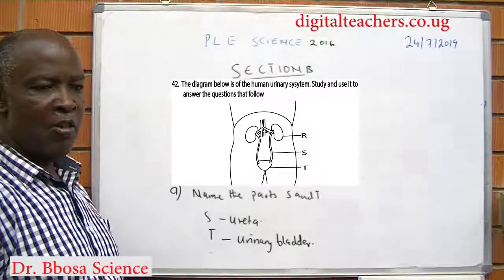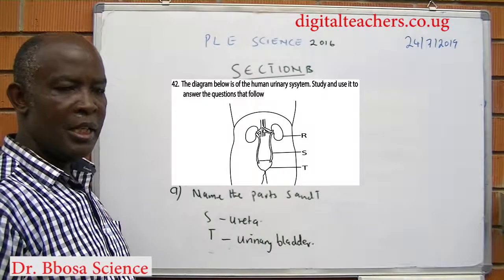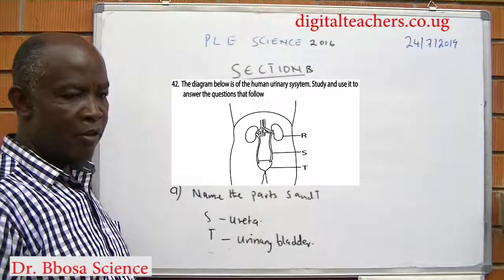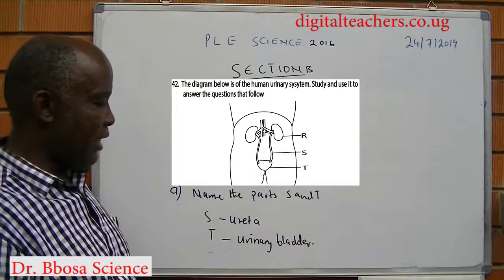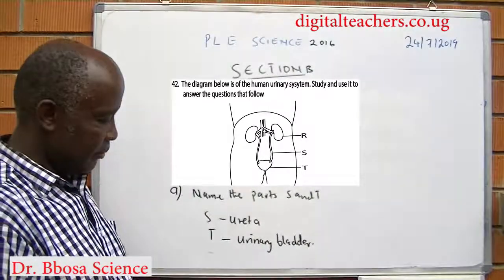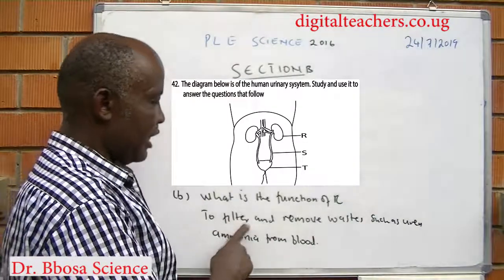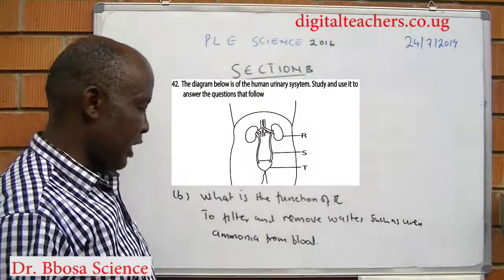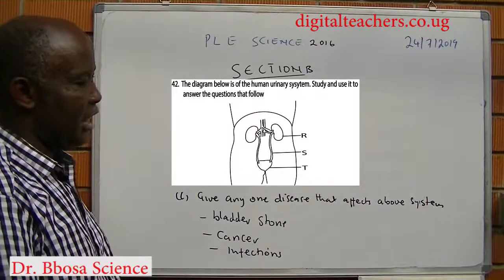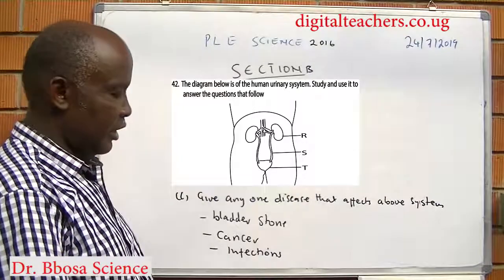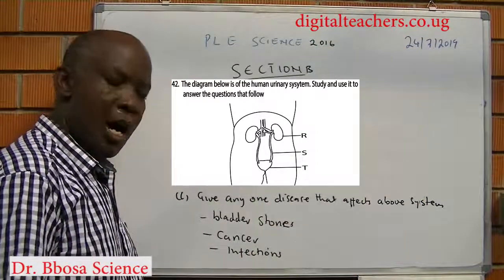Number 42A: the diagram below is of the human urinary system. Name parts marked S and T. Part S is the ureter. Part T is the urinary bladder. Part B: what is the function of the kidney? It filters and removes wastes such as urea and ammonia from blood. Give any disease that affects the above system: bladder stones, cancer, and infections.